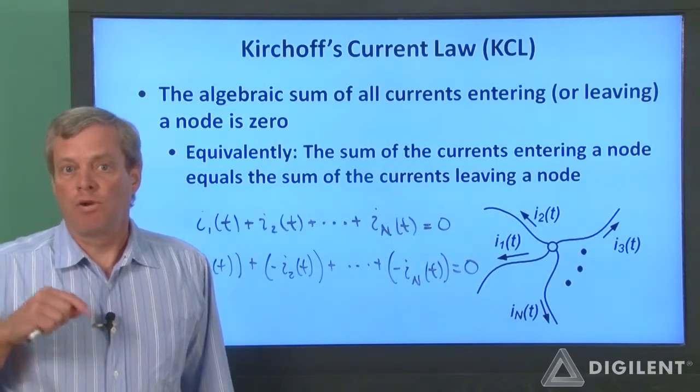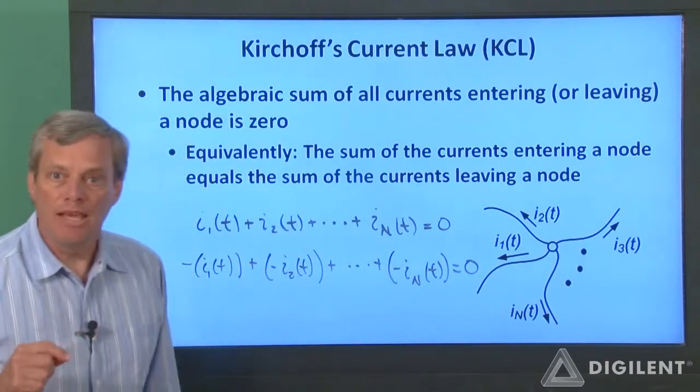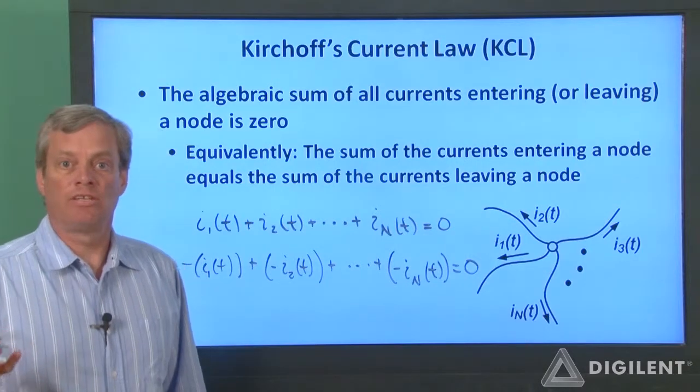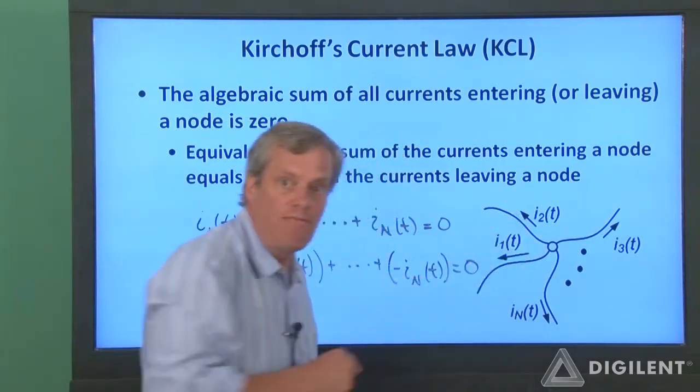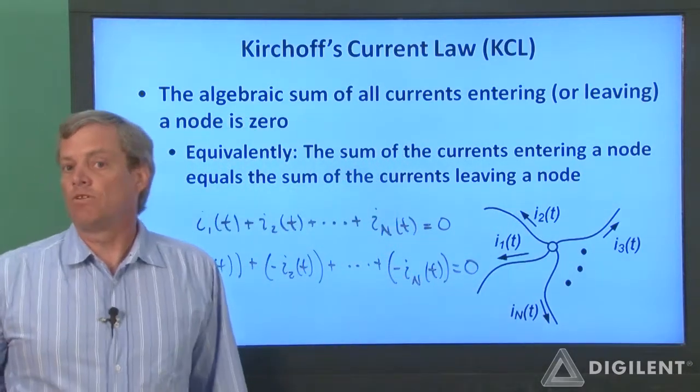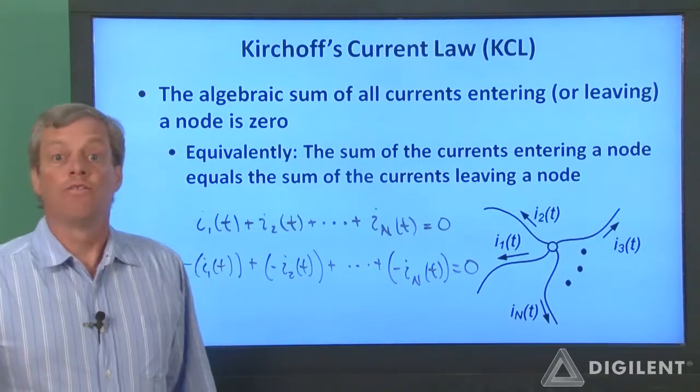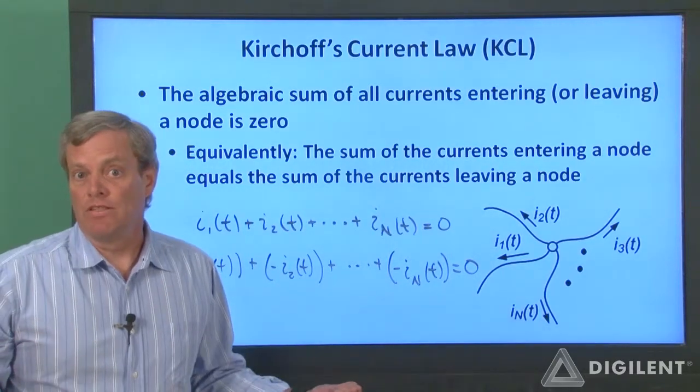Also notice that from our equations, at least one of these currents is going to have to be negative. This simply means that at least one of our currents will be leaving the node, which is consistent with our alternate statement of KCL. The currents entering the node have to be balanced by currents leaving the node.